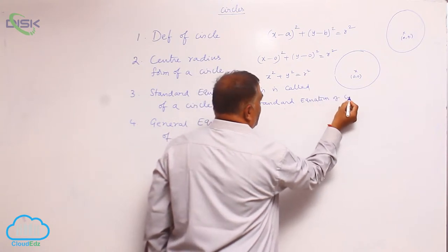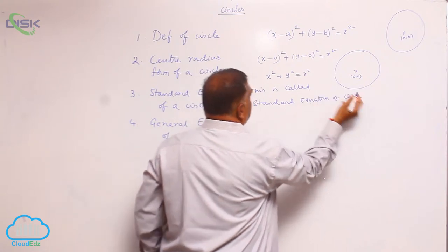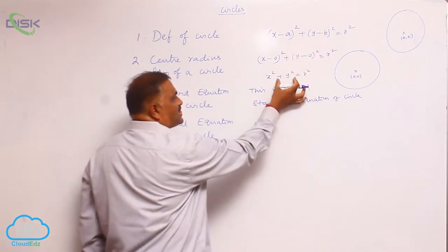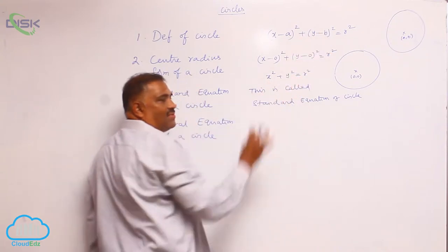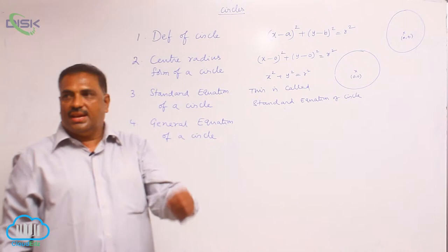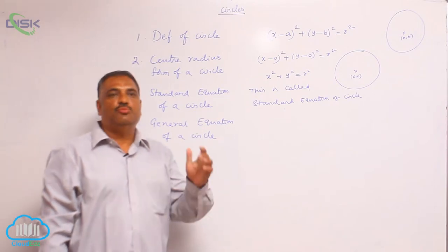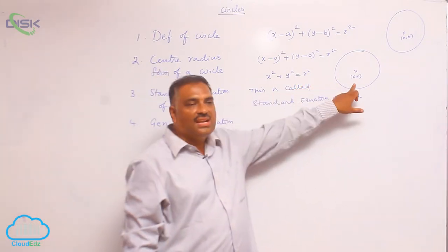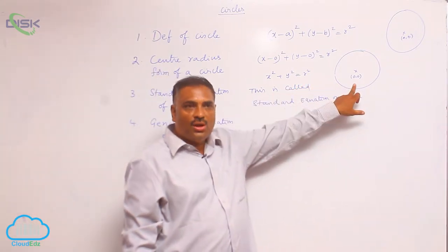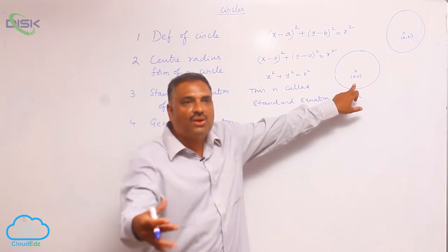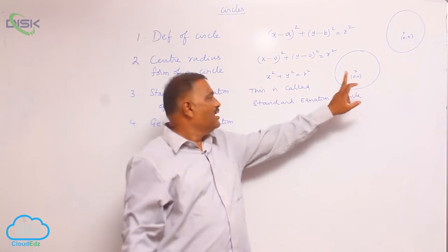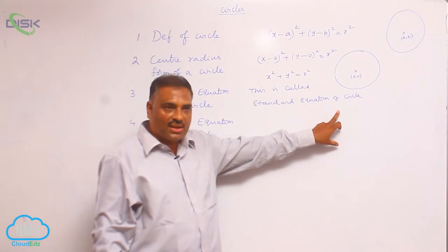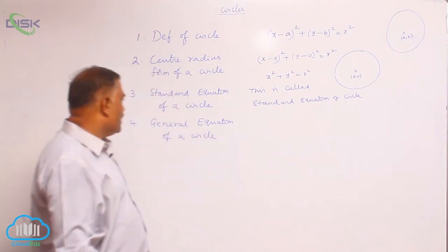We see that this is the center-radius form of a circle. This is the standard equation of a circle. A circle is said to be in standard form when the center of the circle is (0, 0), irrespective of any amount of radius.